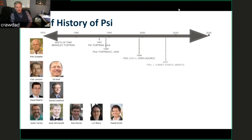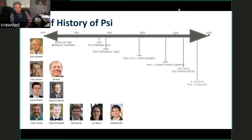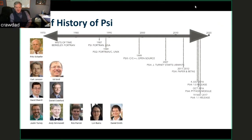After 1999 we saw a real flurry of activities. Justin Turney started working on LibMints, which has been vital for the rapid expansion of the package and capabilities. Starting in 2011 to 2012 we launched PSI4 in beta release and started writing papers describing what we were doing. We went into the 1.0 release of PSI4 in July of 2016. Not long after that, in the same year, PSI became a true Python module so it could be loaded into a pure Python script. Then a 1.1 release in May 2017, 1.2 in 2018, 1.3 in 2019, and we anticipate the 1.4 release very soon.